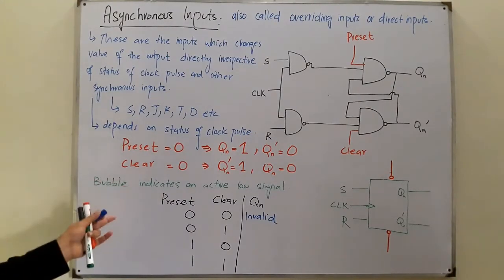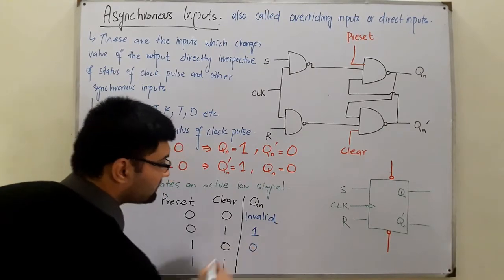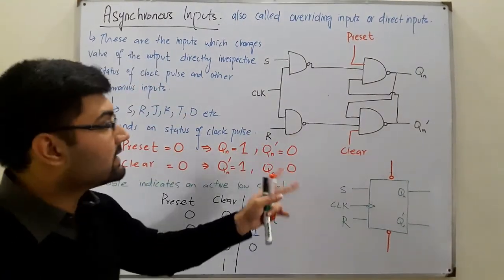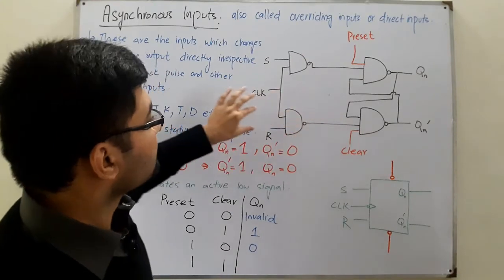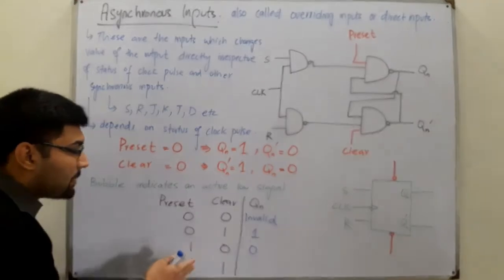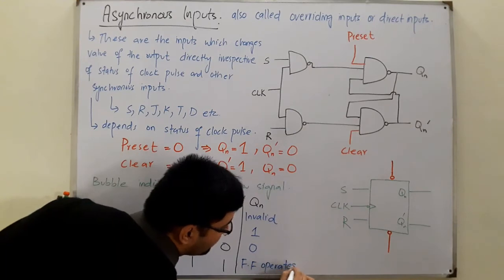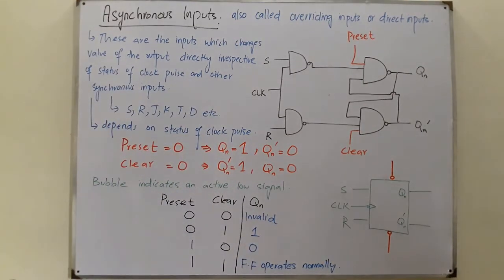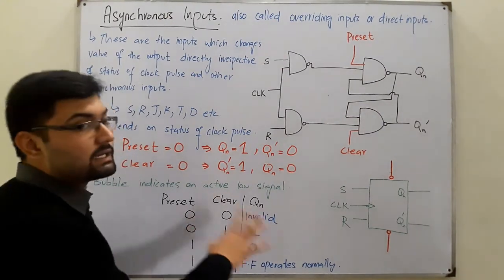When preset is zero, Q_n is one, as we have seen. When clear is zero, Q_n is zero. When both preset and clear are one, they will not affect the NAND gate, and the flip-flop will depend on the synchronous inputs and the clock pulse — meaning the flip-flop operates normally. Normal operation depends on the clock pulse and the synchronous inputs only when both asynchronous inputs are high.